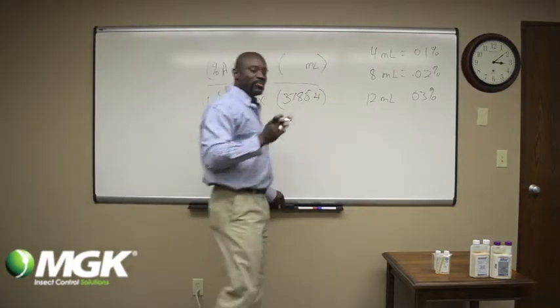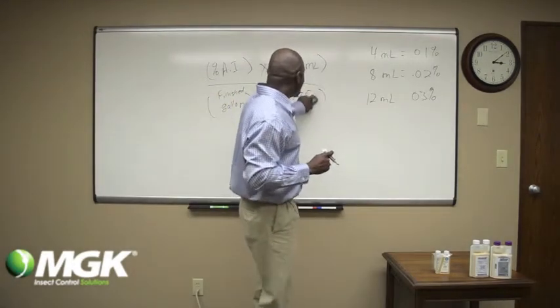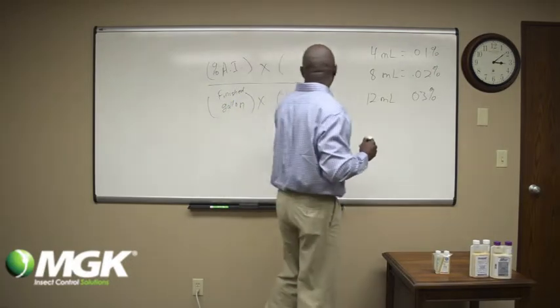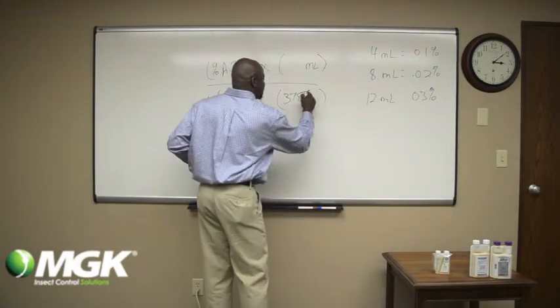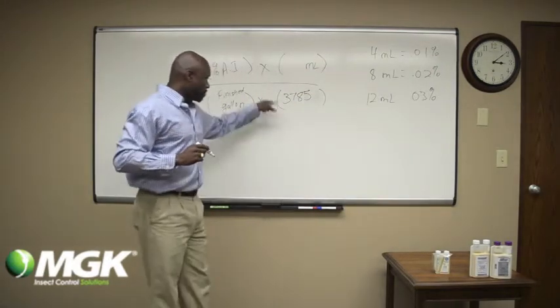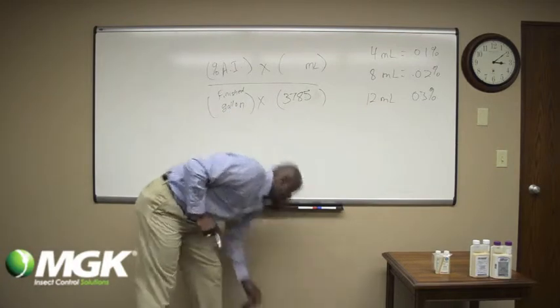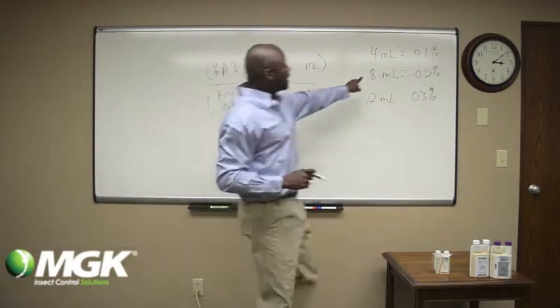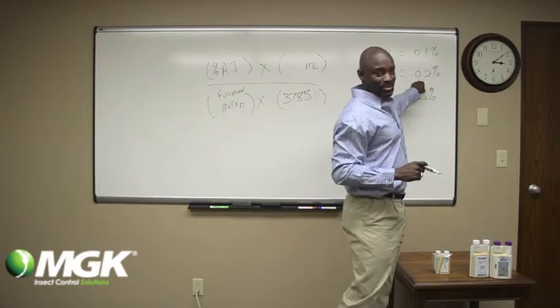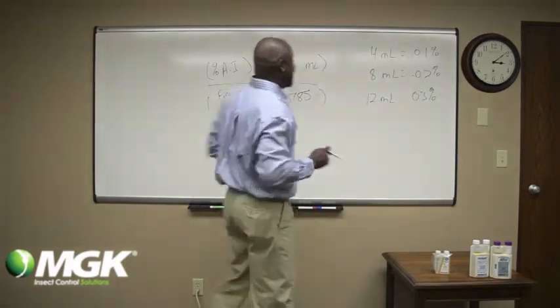We're going to drop the 0.4 because we really don't need to round up. So if we do this calculation, all we're doing is changing this number because this is how many milliliters are in a gallon. If we plug in this number, we should come out to 0.02%. Let's see if that's the case.